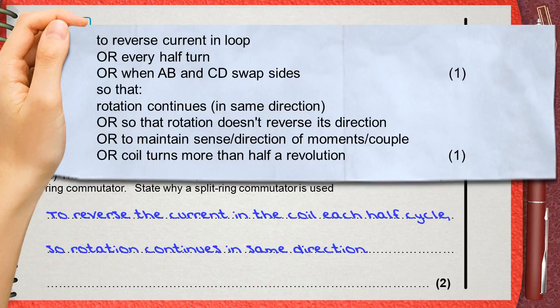What the commutator does? This is the first mark and the reason is the second mark. Let's compare the mark scheme with our answer. To reverse the current in the coil each half cycle. This is what the commutator does. This is one mark.